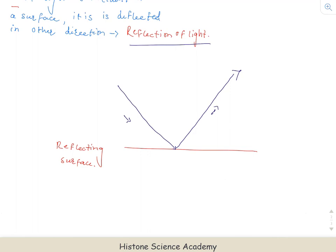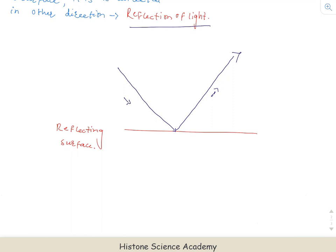Reflection of light obeys rules and regulations — laws that it follows. But before diving into those laws, let's cover some terminologies so that it becomes easier to understand. When this beam of light hits the surface, I will say that this is an incident ray. This ray of light which is on the surface — I will say that this is an incident ray.